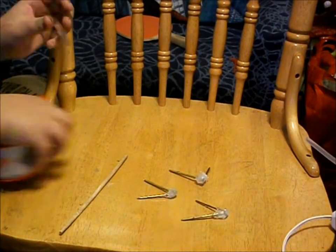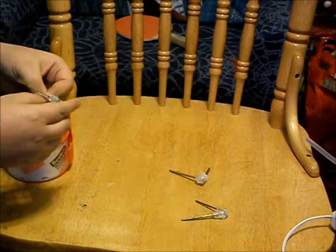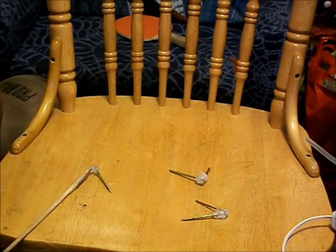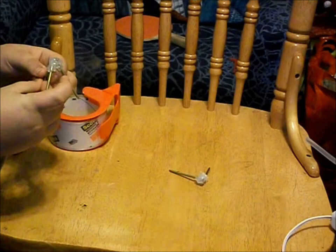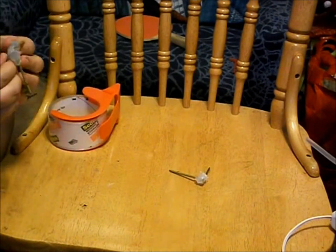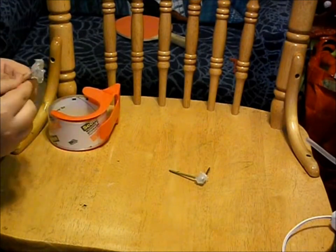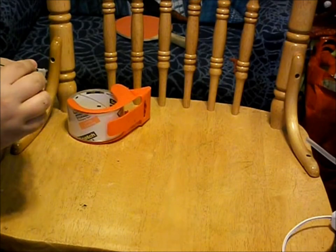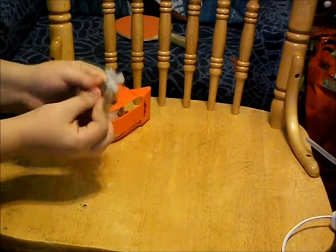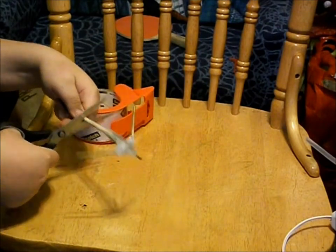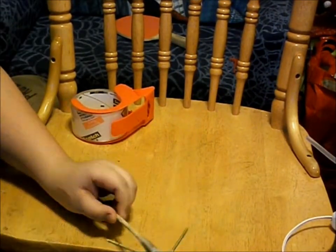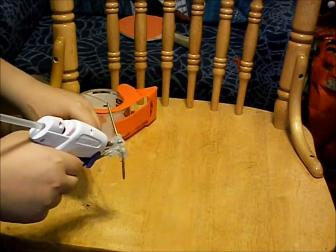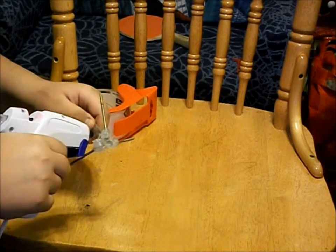Now you gotta tape the little nails to the skewer, so the big nails are the hook. Now cut it how long you want it. Now glue that on because you don't want it falling off.